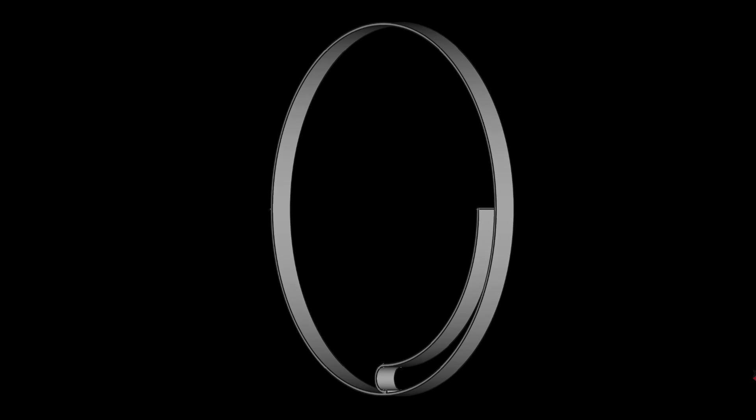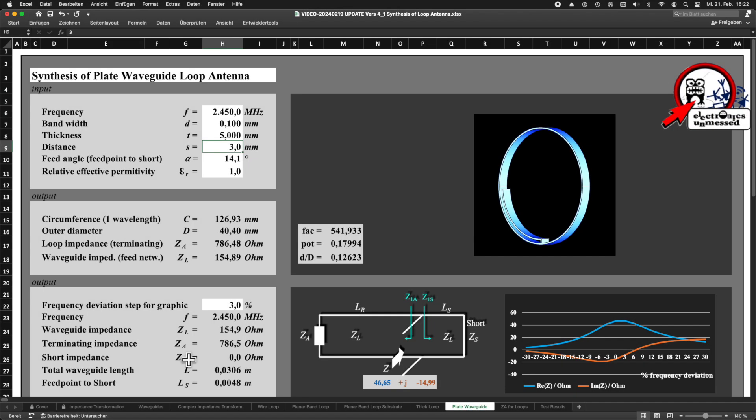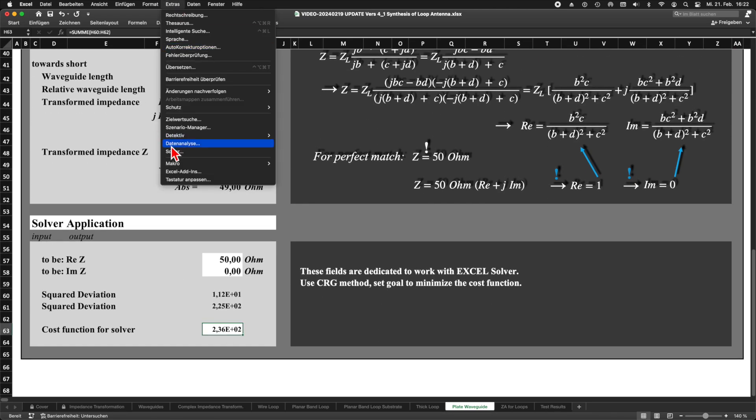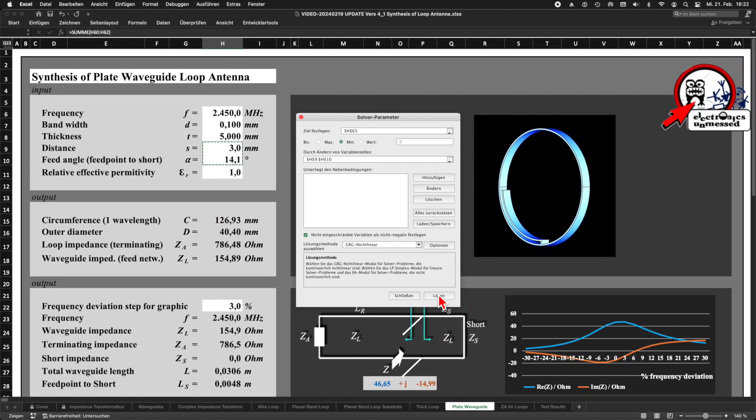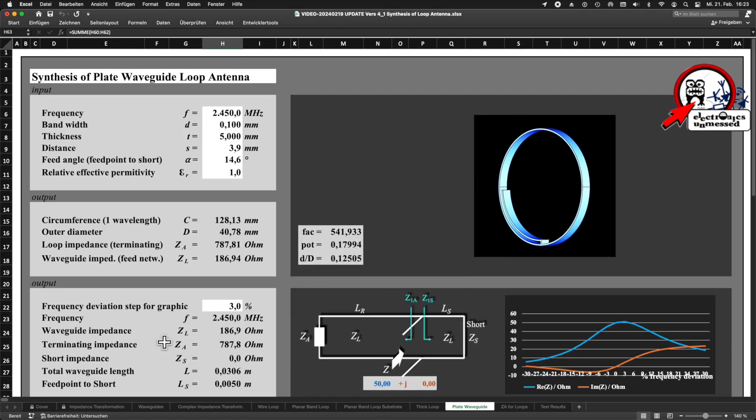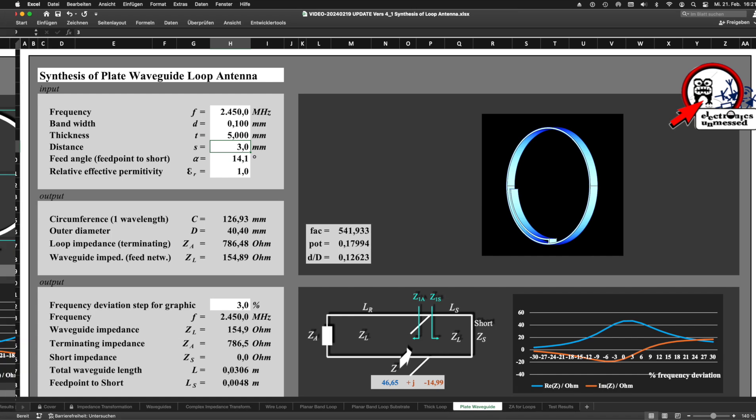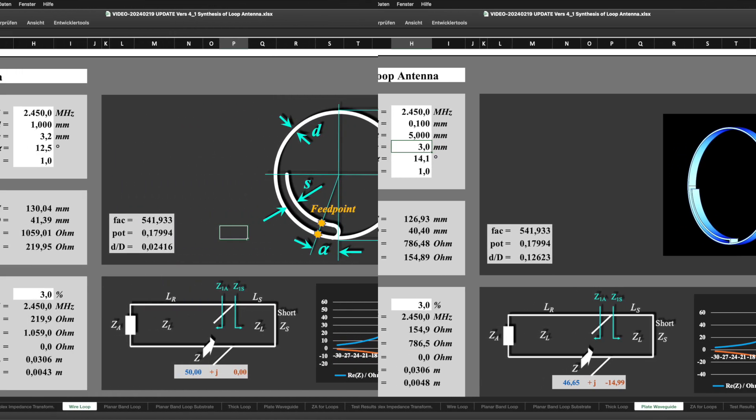For now, I will build it for a higher frequency, namely 2450 MHz. I choose T equals 5 mm and D equals 0.1 mm. The dimensioning is just a matter of minutes and this time I compare the results with the wire loop antenna. The results of that design are also pretty plausible.